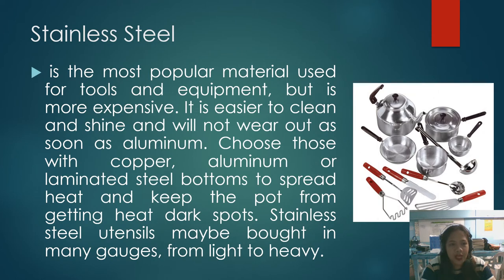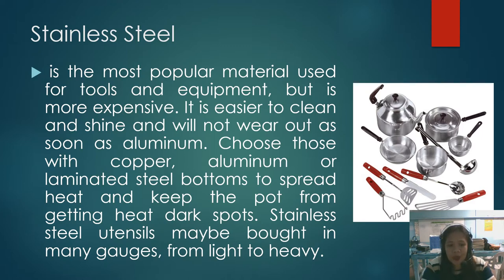Second, we have stainless steel, which is the most popular material used for tools and equipment, but is more expensive. It is easier to clean and will not wear out as soon as aluminum. Choose those with copper, aluminum, or steel bottoms to spread heat and keep the pot from getting dark spots. Stainless steel utensils may be bought in many grades, from light to heavy.